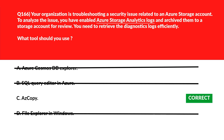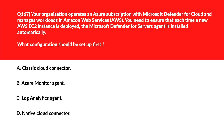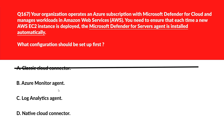Next question. Option A, the Classic Cloud Connector, is an old implementation that doesn't support the native integration model, making it unsuitable — incorrect. Option B, Azure Monitor Agent, focuses on performance and telemetry collection but does not deploy the Defender for Servers agent on AWS EC2 instances — incorrect.